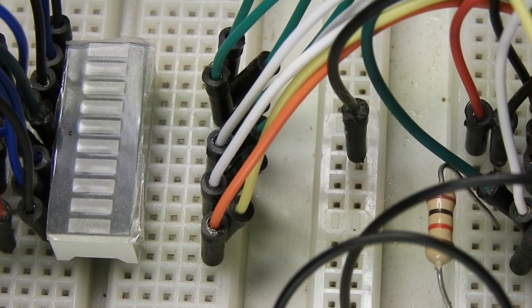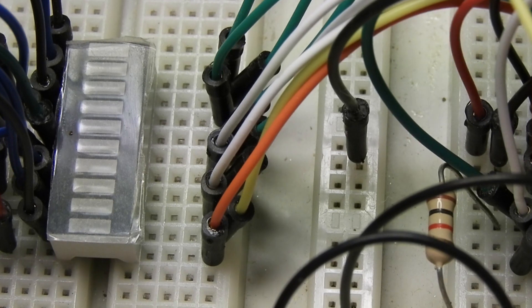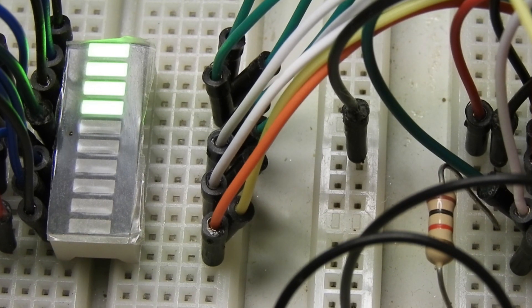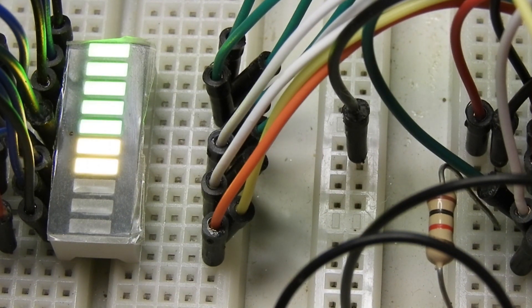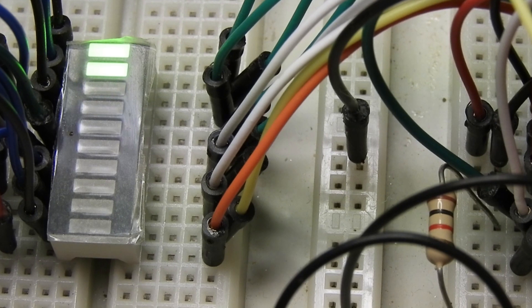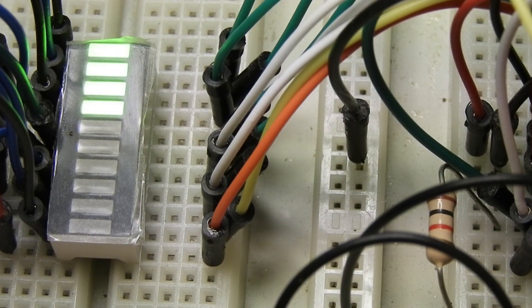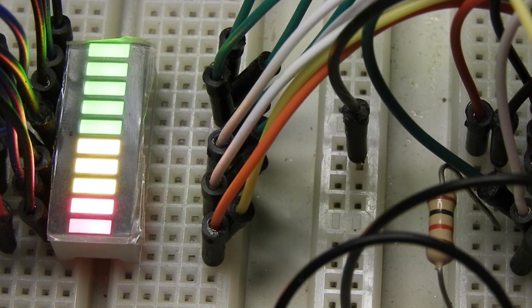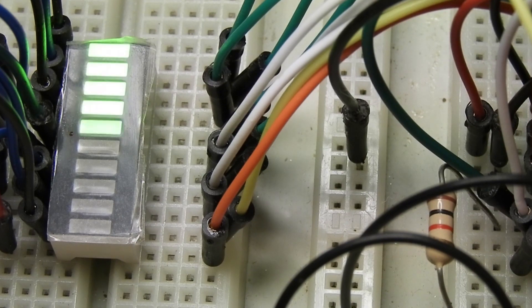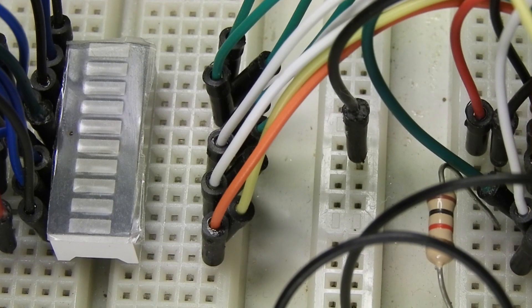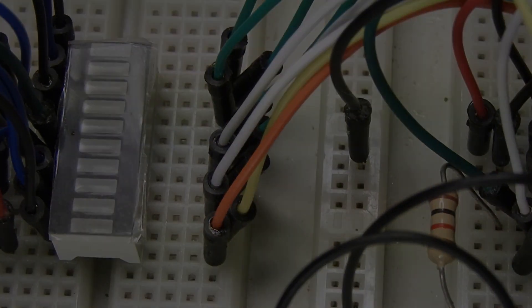It powers on and I'm just going to rotate the variable resistor. I think I'll be able to come up with some other uses other than a volume indicator with this chip. I think that's pretty neat. Thanks for watching.